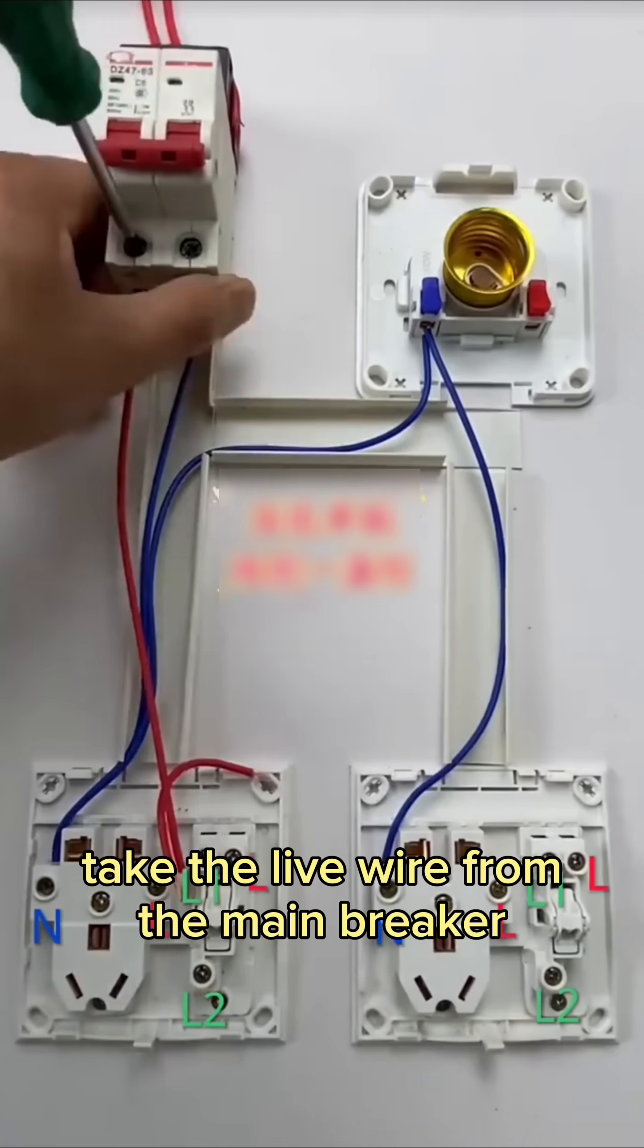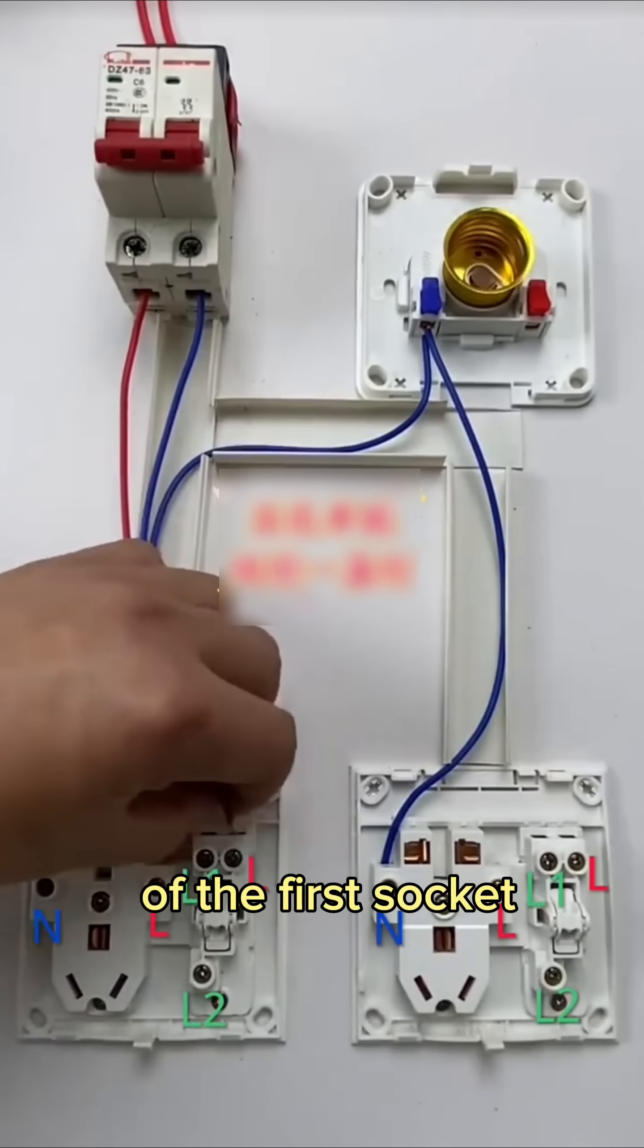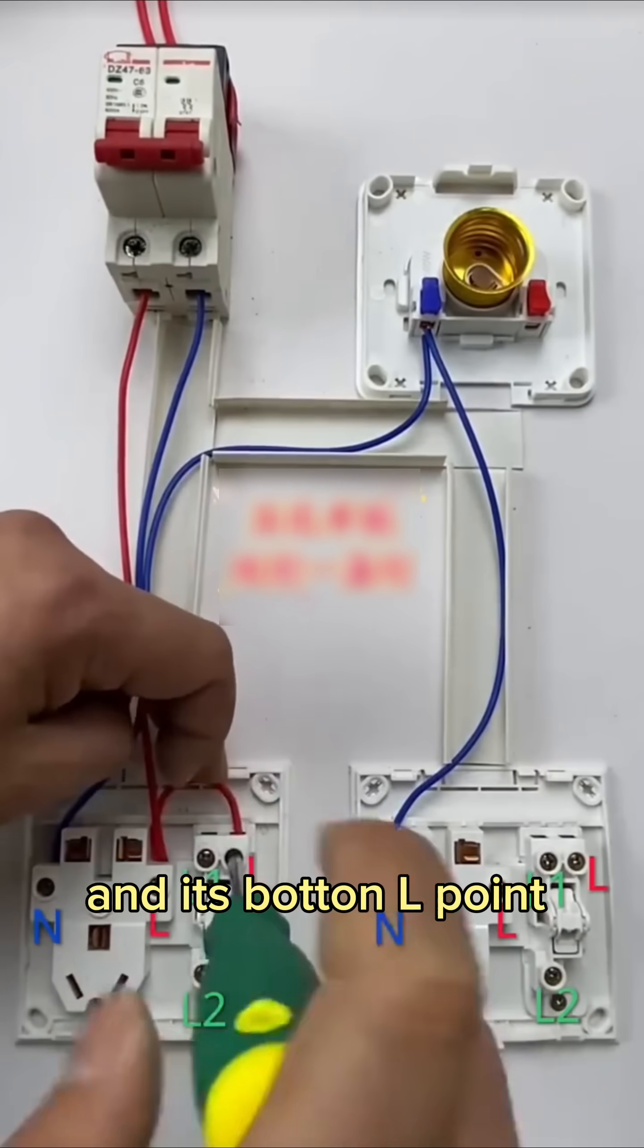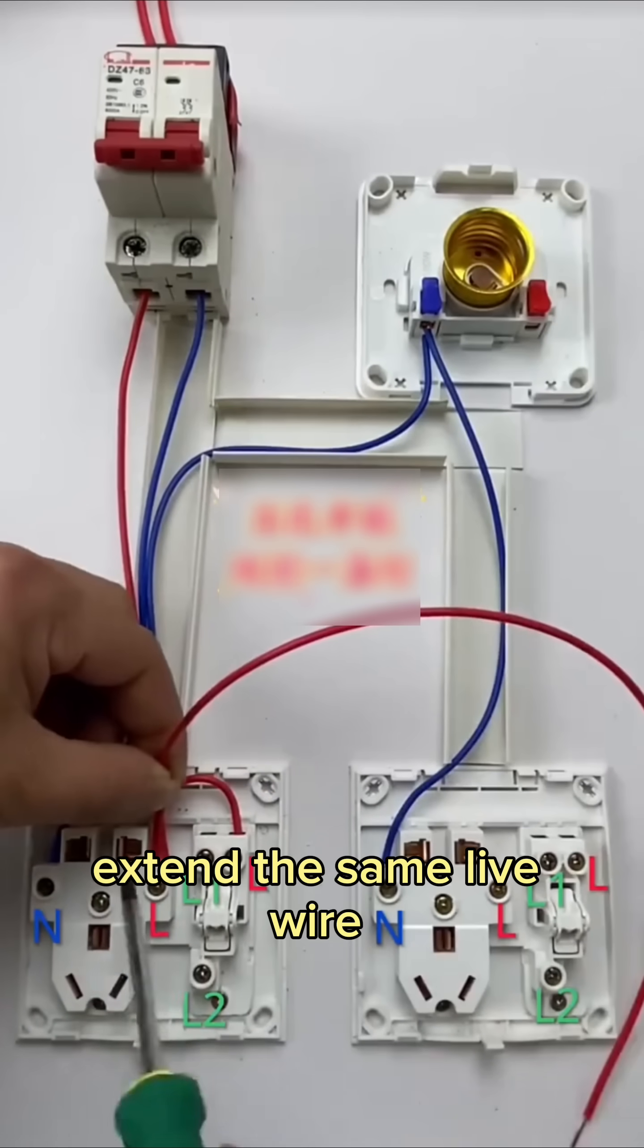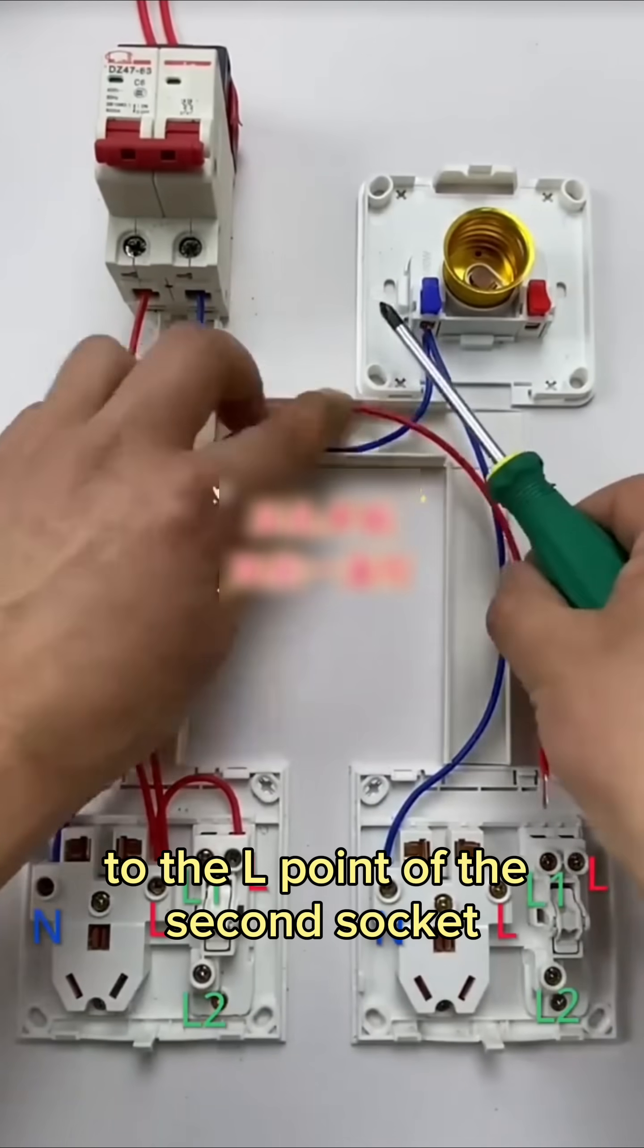Next, take the live wire from the main breaker and connect it to the L point of the first socket and its bottom L point. Then, extend the same live wire from that socket's L point to the L point of the second socket.